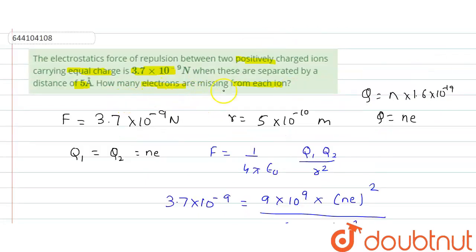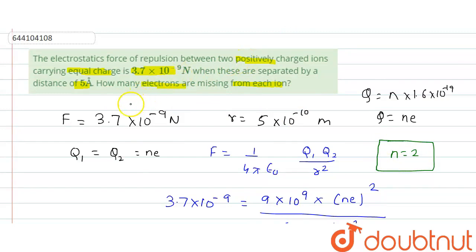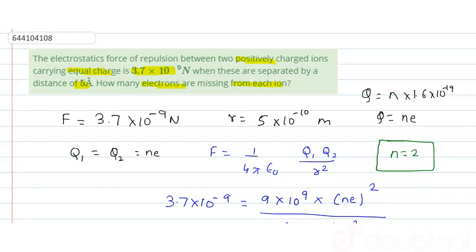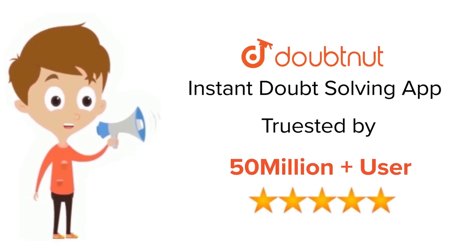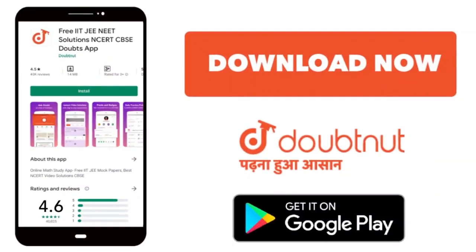That means two electrons are missing. The question asked for the number of electrons missing from each ion, so n = 2. There are two electrons missing from both these positively charged ions. Hope you have understood this explanation. Thank you. For class 6–12, IIT JEE, and NEET level content, trusted by more than 5 crore students, download DoubtNet today.